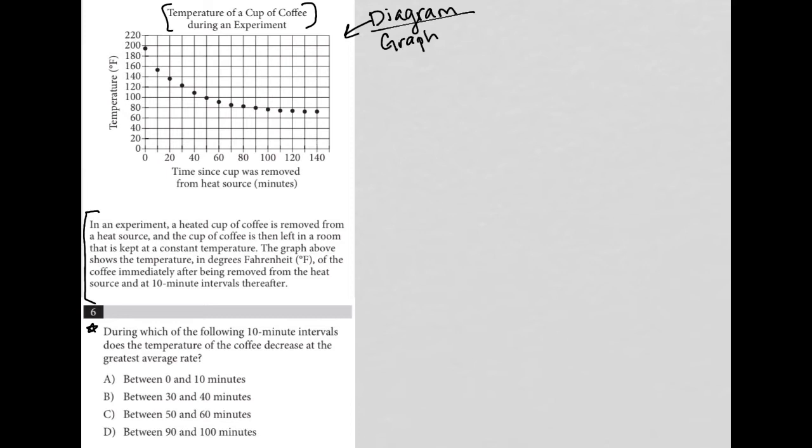So choice A says between zero and 10 minutes. Well, what's happening between zero and 10 minutes? We're going down from what we could say is 190, let's call it 195, to what we could say is 155. All right, so we decrease, that's a decrease of 40.